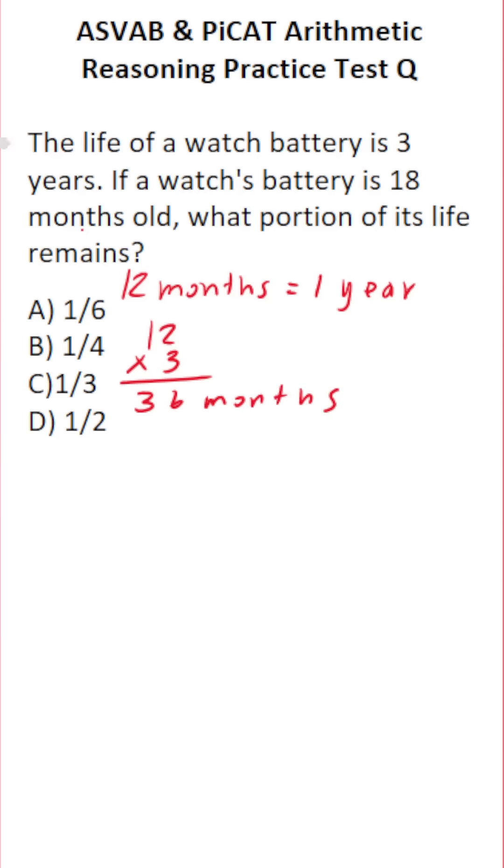Now, according to the problem, the watch battery is 18 months old. How much life does it have left? Well, we're going to do 36 months minus the 18 months that it's already been used for. And that will tell us how many months of life it has left.